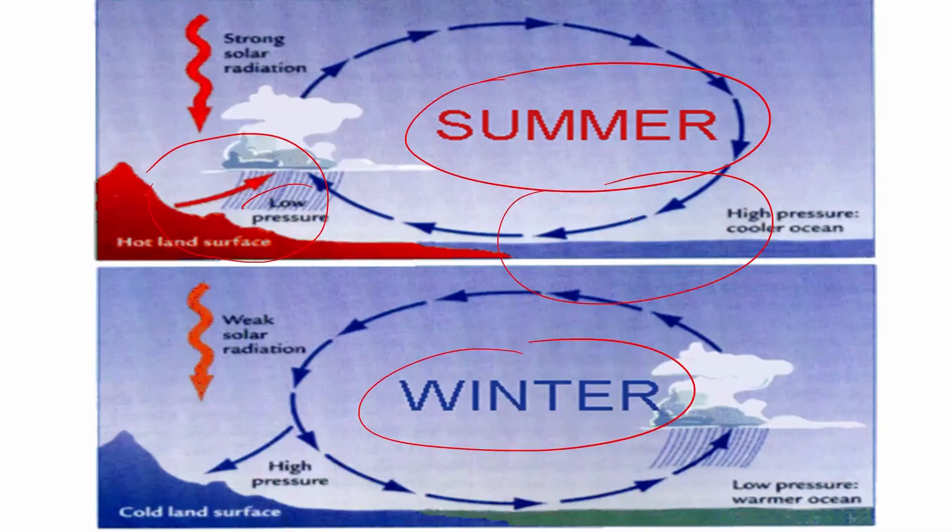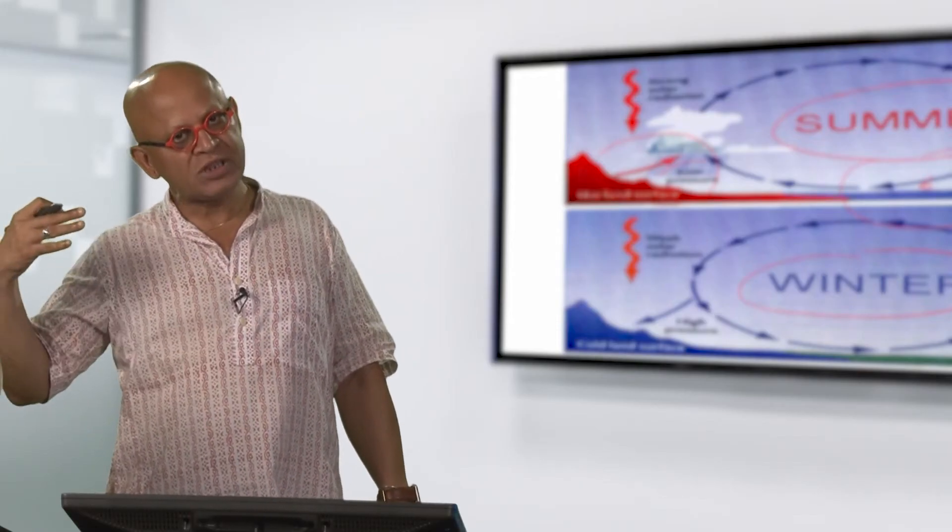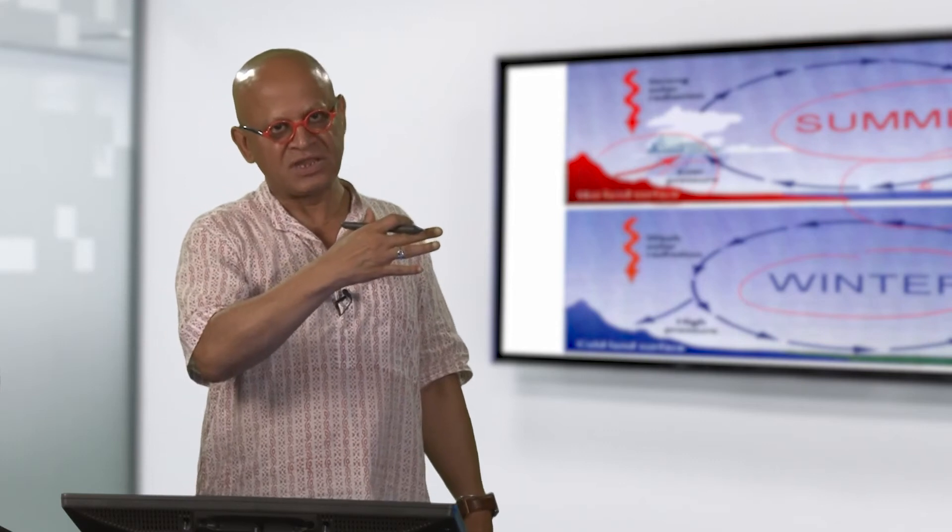So what should happen to the winds? Basically the winds will go from high pressure to low pressure. So the winds want to go from the ocean towards the land in the summer months.